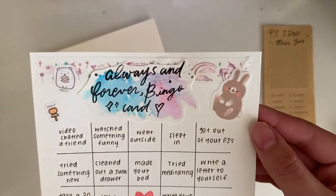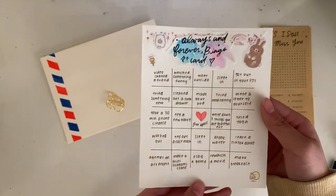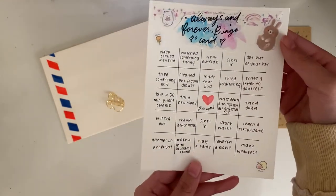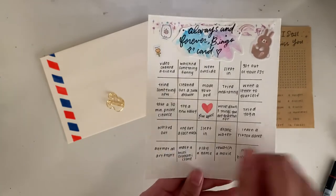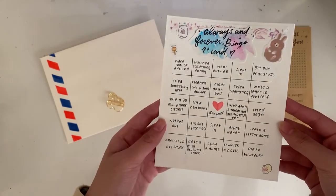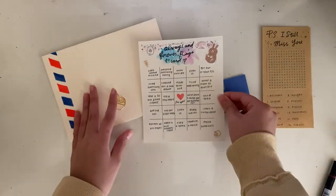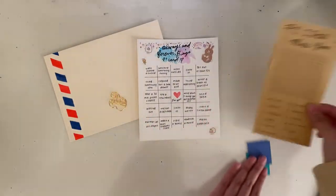And then lastly we have this fun little Always and Forever bingo card. This is a play off of Always and Forever Laura Jean. And I just have a couple of bingo things that they can add in and they could either cross it out or just leave it plain and simple like that. I decorate it with some washi tape and some stickers, and that is the final look.